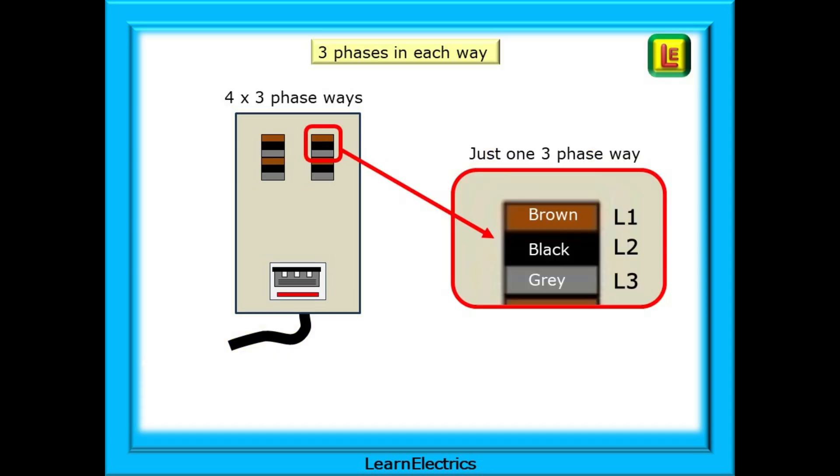Each way will have an L1, L2 and L3 terminal. We will use the harmonised colours of brown, black and grey. Older boards will have red, yellow and blue for the phases with black as the neutral. Some will have all black or even all white. In fact, if you're about to work on an existing board, assume nothing. Carry out your own checks and establish just what colours have been used.